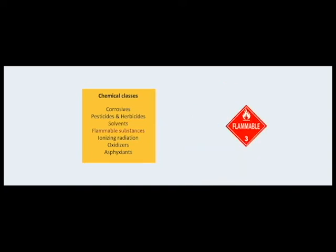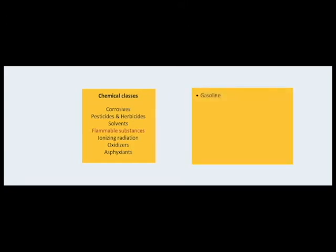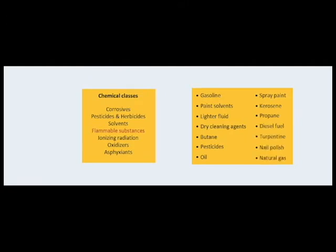Flammable substances are chemicals that have the capacity to ignite and burn. These can be solids, liquids, or gases. Flammable and combustible products are readily available and used for a wide variety of purposes. Gasoline is the most common. Others include paint solvents, lighter fluid, dry cleaning agents, butane, pesticides, oil, spray paint, kerosene, propane, diesel fuel, turpentine, nail polish, and natural gas.